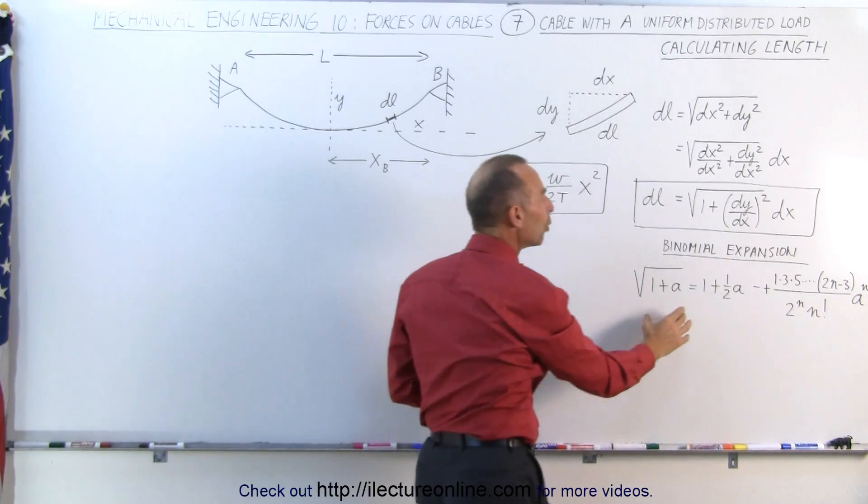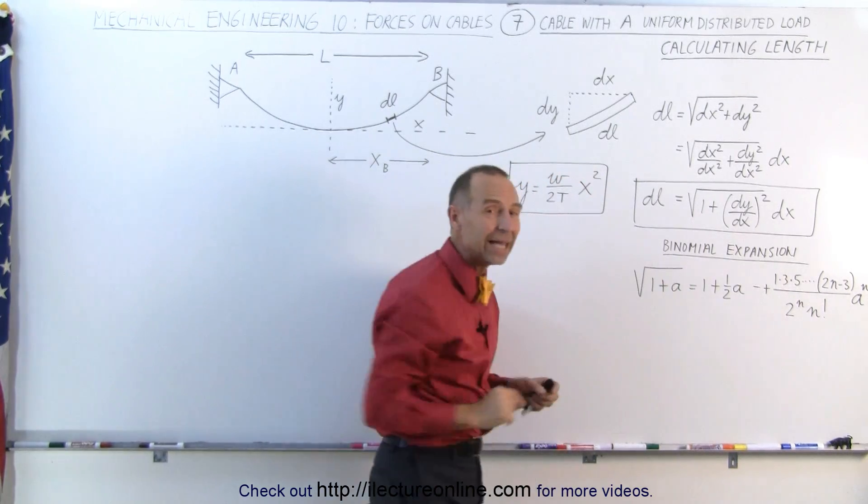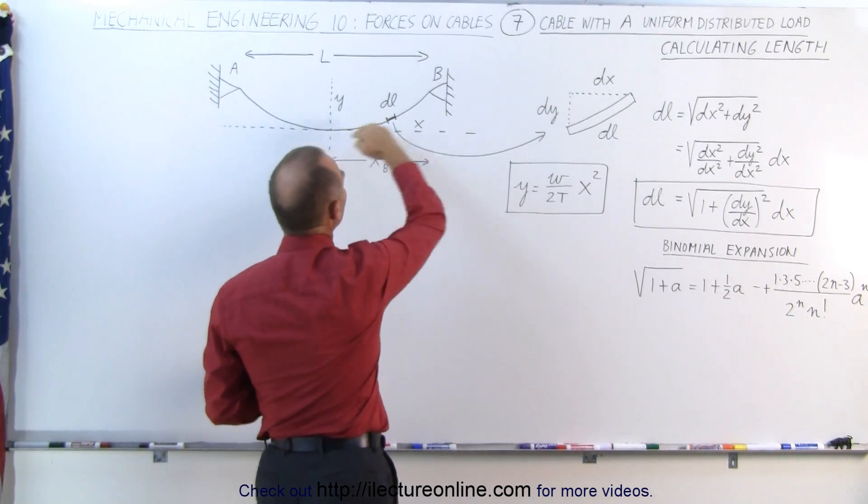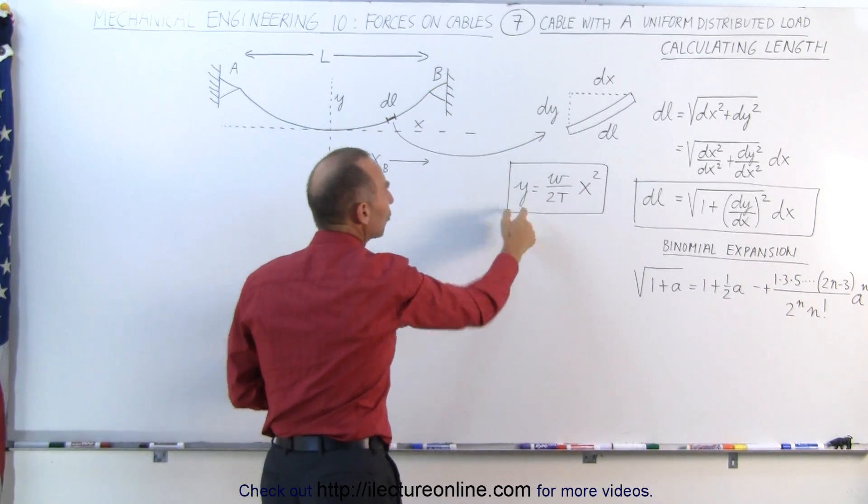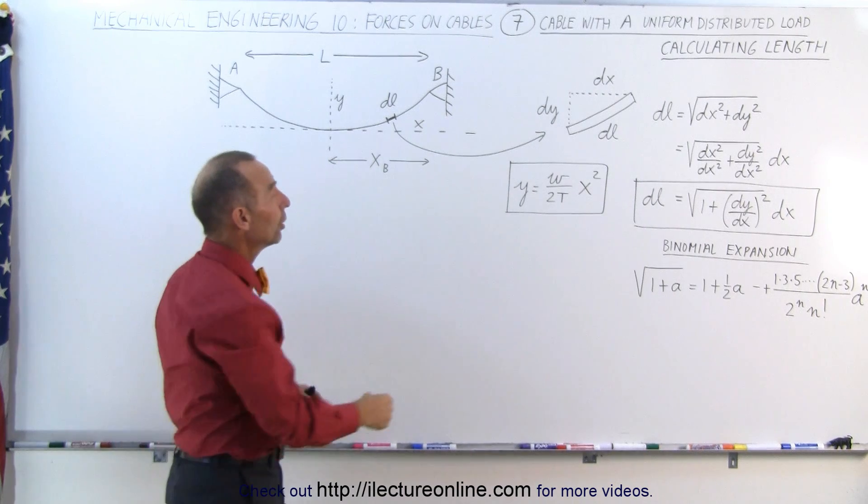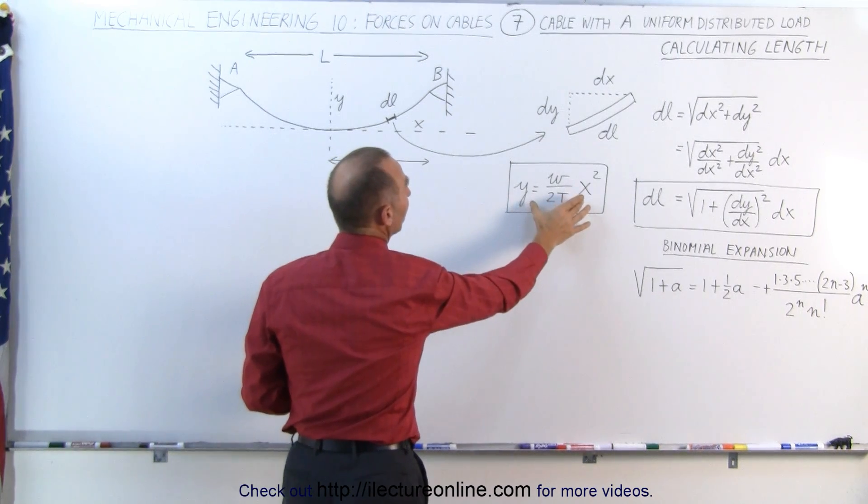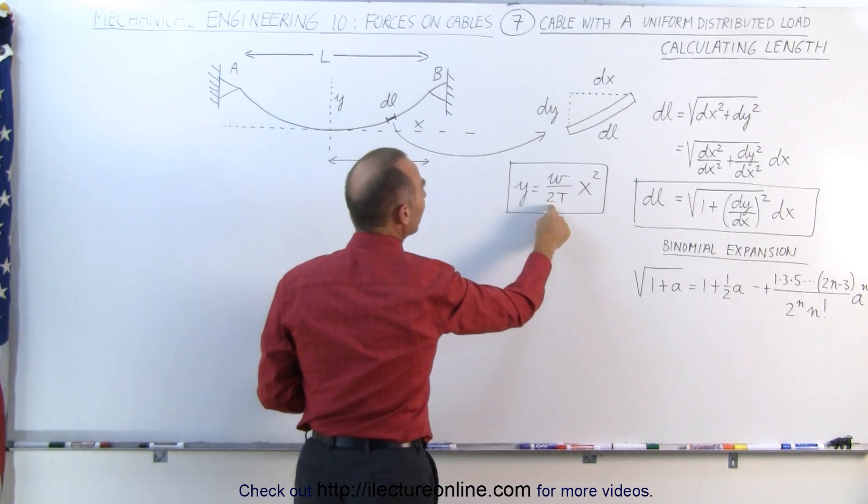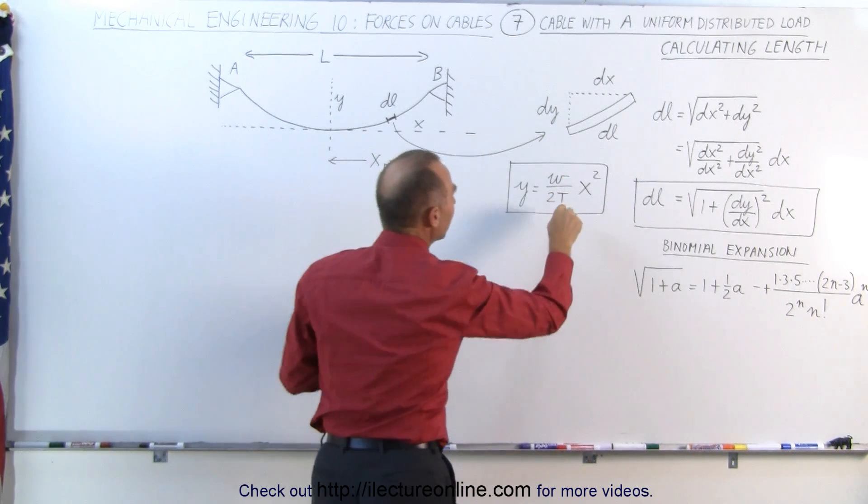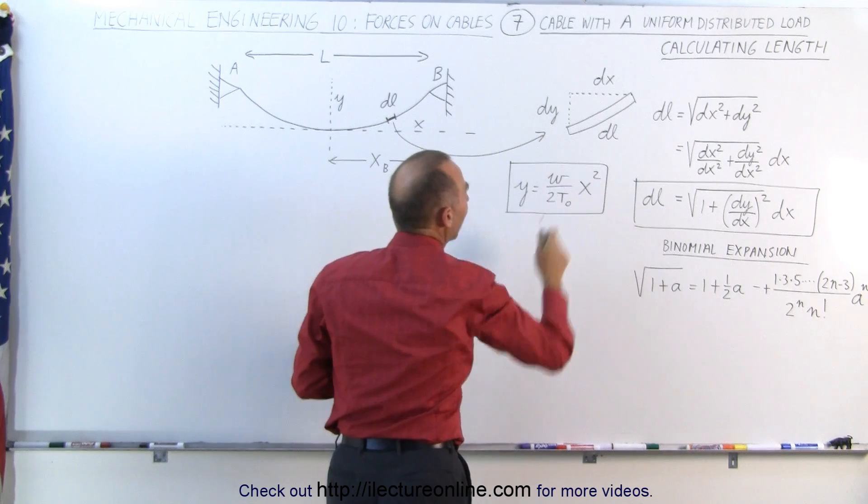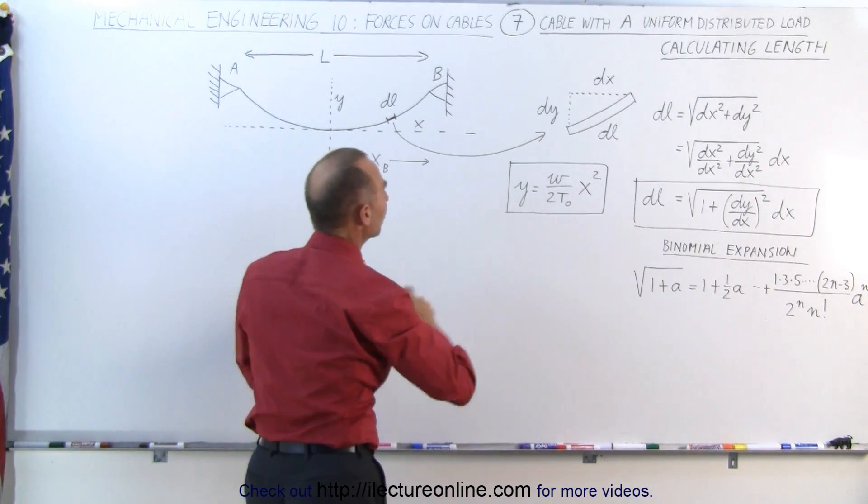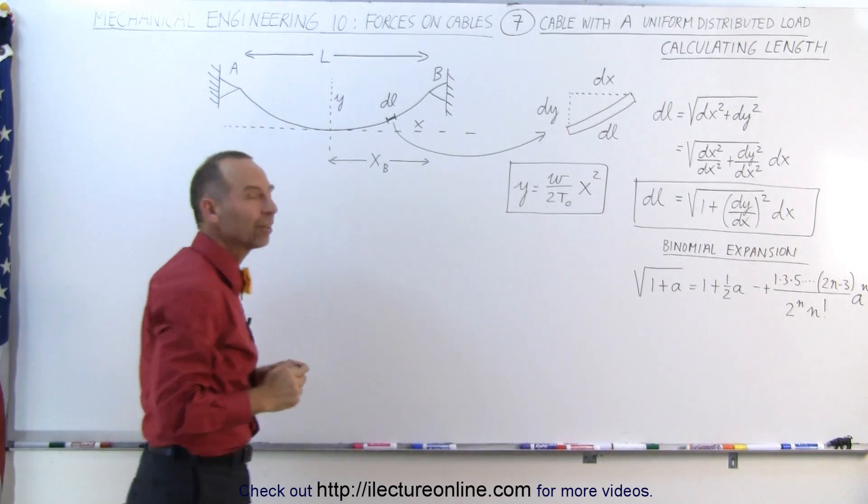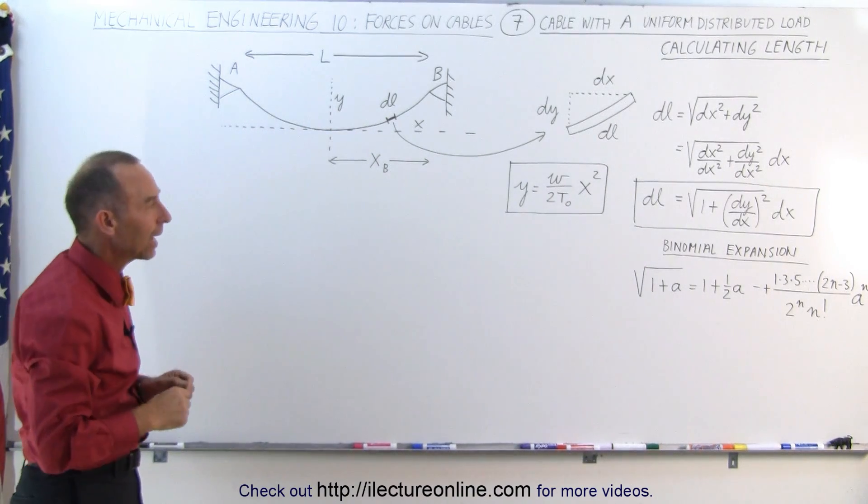I've also written down the binomial expansion because we're going to need that in just a little while, and don't forget the equation of a cable that supports a uniform distributed load which is equal to the equation of a parabola which is equal to the weight per unit length divided by 2T sub naught times X squared, where T sub naught is the horizontal tension in the cable, which is also the tension at the very lowest point on the cable.